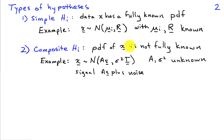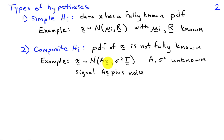On the other hand, if the PDF of the data is not fully known under that hypothesis, we say the hypothesis is composite. So if I have a case where I'm looking for a known signal in noise, but I don't know the amplitude of the signal or the variance of the noise, then I'd have a composite hypothesis. In this case, I've partly specified the probability distribution — it's Gaussian with mean A times S and covariance matrix sigma-squared I — but since the amplitude A and the variance sigma-squared are unknown, I have a composite hypothesis testing problem.